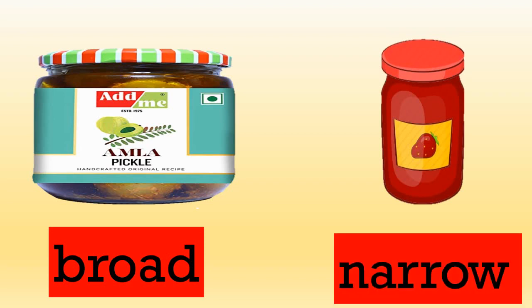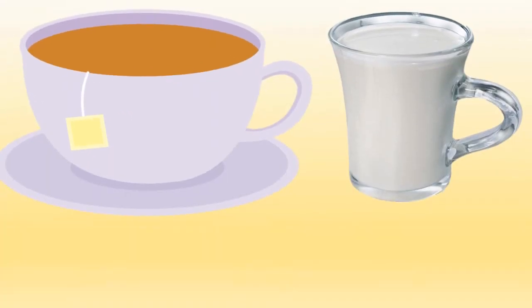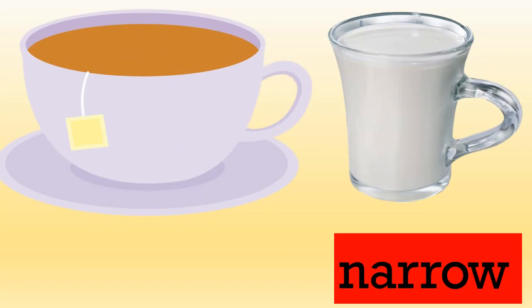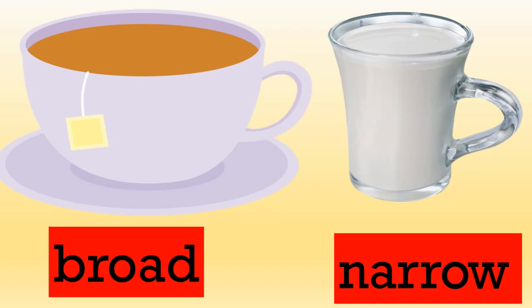Let's see some more examples. In this example, in which cup is there milk? Yes, the milk is in the narrow cup. And where is the tea? Yes, the tea is in the broad cup.